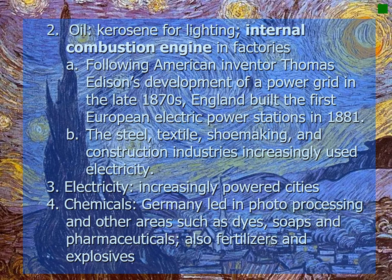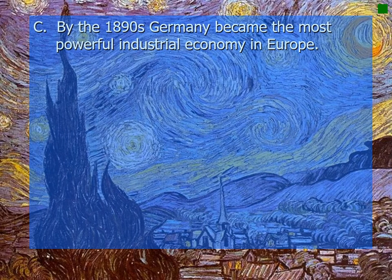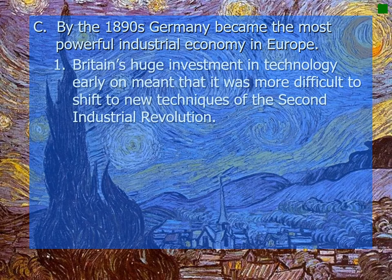Chemicals were also central to the Second Industrial Revolution. Germany led in photo processing and other areas such as dyes, soaps, pharmaceuticals, fertilizers, and explosives — the last of which would come into play greatly in World War One. By the 1890s, Germany became the most powerful industrial economy in all of Europe. Britain's huge early investment in technology made it more difficult to shift to the new techniques of the Second Industrial Revolution.